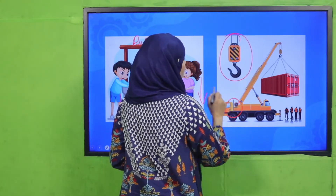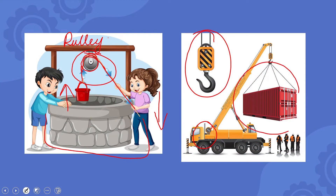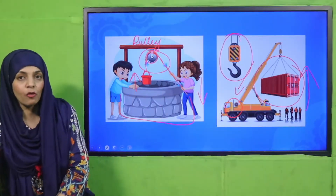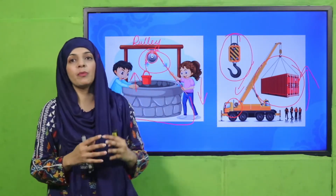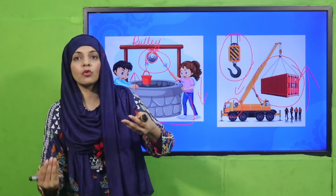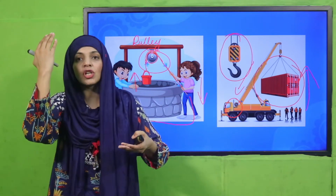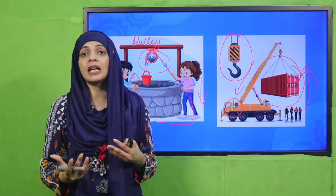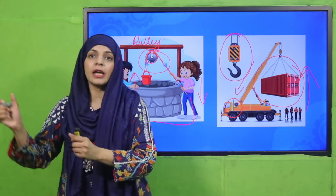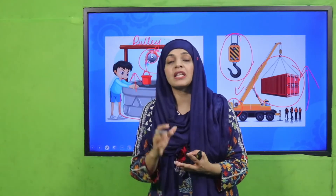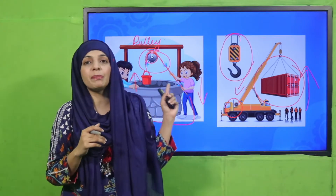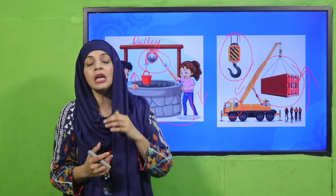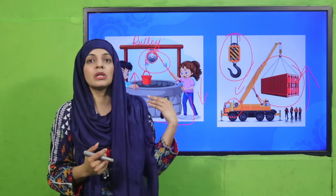Pulleys are also used in different cranes. The machine applies effort and can lift a very heavy load. Force is applied at one angle and the weight moves upward. When you try to lift a weight directly, both the weight and force direction are upward, which requires more effort. But when you use a simple machine, the force direction is different from the weight's movement, which greatly reduces the effort required.